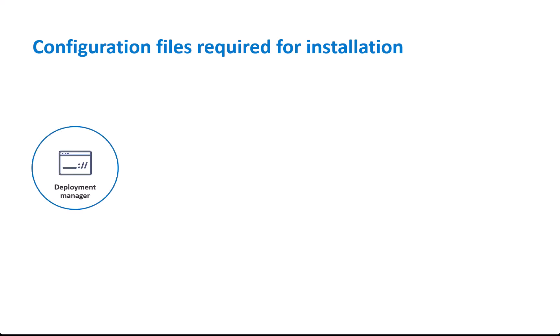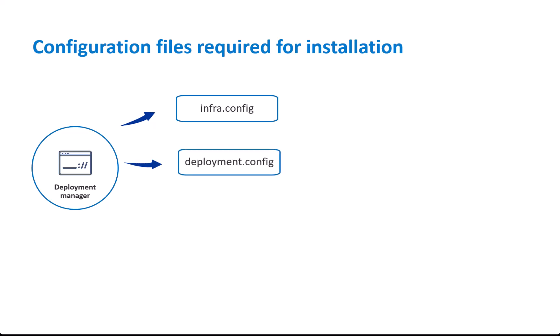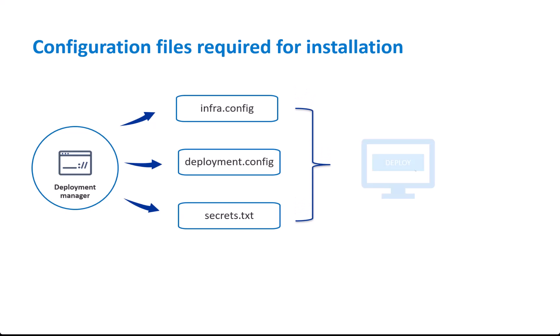The deployment manager includes configuration files such as infra.config, deployment.config, and secrets.txt. These configuration files include the BMC Helix Platform Services settings that are required to perform the deployment.